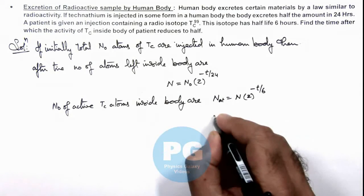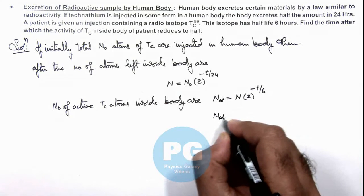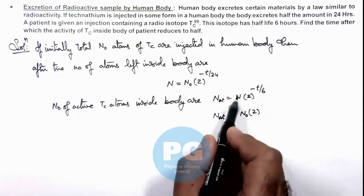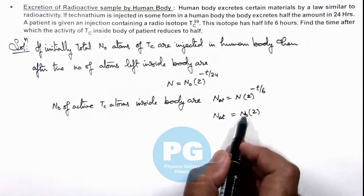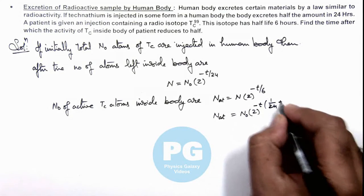If we substitute the value of N, then number of active atoms here can be written as N₀ × 2^power. N can be substituted from here, so this will be -t × (1/24 + 1/6).